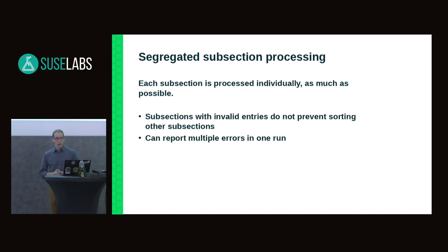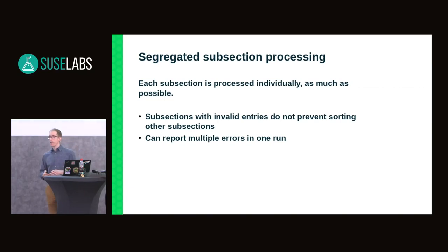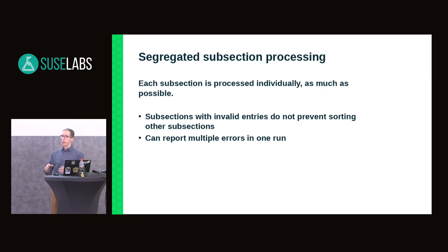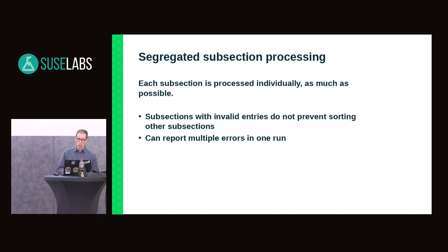The first significant change is the so-called segregated subsection processing, also known as independent entry processing. It means that each subsection — and in fact each entry within those subsections — is processed independently as much as possible. This makes the processing more robust. Even if one subsection has an invalid entry, such as a patch with a git commit tag pointing to a commit that's not found, it won't prevent sorting the other entries in other subsections. A corollary is that it's now possible to report more than one error in a single run.